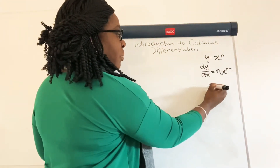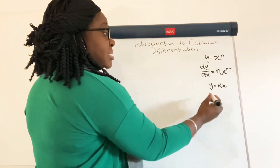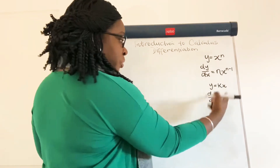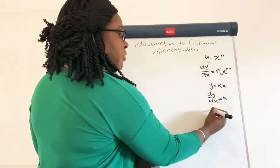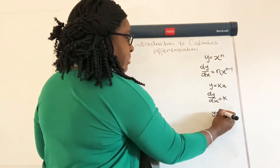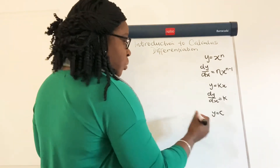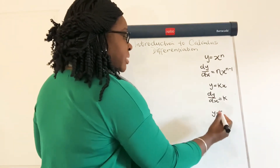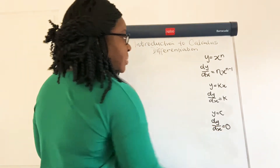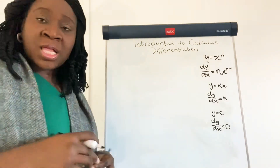The next rule would be if y is equal to kx, k being a constant, then dy by dx would be equal to k — it would just be the constant. And if we have y is equal to c, where c is just a constant on its own with no variables, then dy by dx would be equal to 0. So those are the three rules that we're going to be working with to help us differentiate.